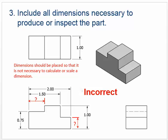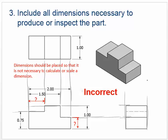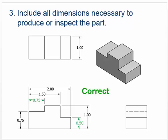Include all dimensions necessary to produce or inspect the part. What you do here is start from the bottom and slowly work your way up. For each line, ask yourself: do I have it dimensioned? Do that for horizontal lines first, then go through and do the vertical ones. The incorrect example is missing dimensions; the correct example has everything dimensioned, including the .75 and the other given dimensions, so everything is covered.